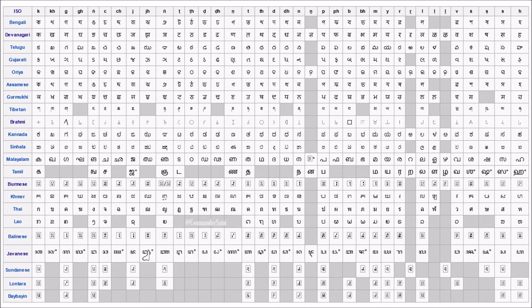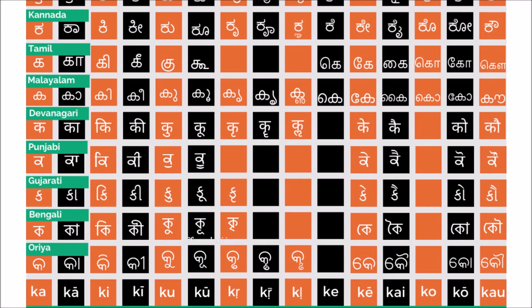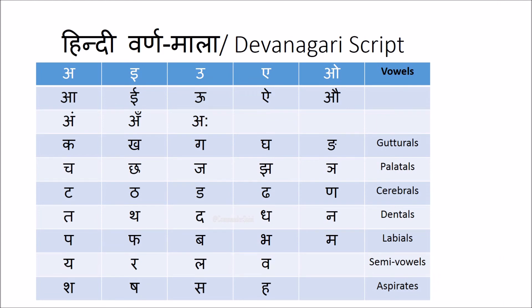Now let's focus on the main part. When we look at the Devanagari varnmala, this is how the table looks. Everything beyond it is either half of it, a mix, a multiple, or a matra of it, but the complete structure of Devanagari script is this table. If you count, there are seven groups: vowels, gutturals, palatals, cerebrals, dentals, labials, and several semi-vowels/sibilants — the last part can be joined into one group. So there are seven groups.